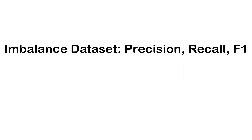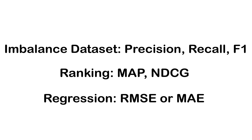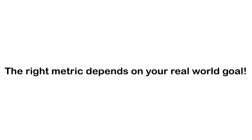Accuracy is not the right metric to use. For imbalanced datasets, you need precision, recall, or F1 score. For ranking problems, use metrics like MAP or NDCG. For regression, RMSE or MAE might be more appropriate than R squared. The right metric not only depends on the type of problem, but also on your problem's real-world impact.